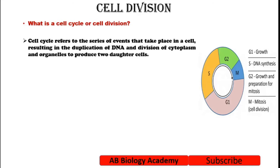Simply, chromosomes undergo duplication with the help of replication, and then they separate into two cells, and then cytoplasm division takes place, and then there are two daughter cells.